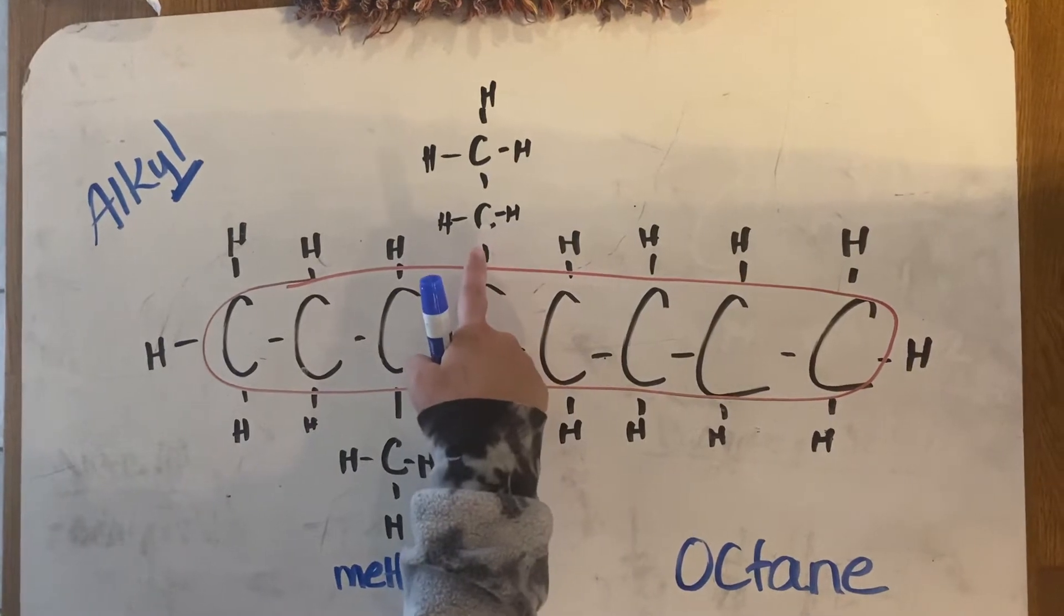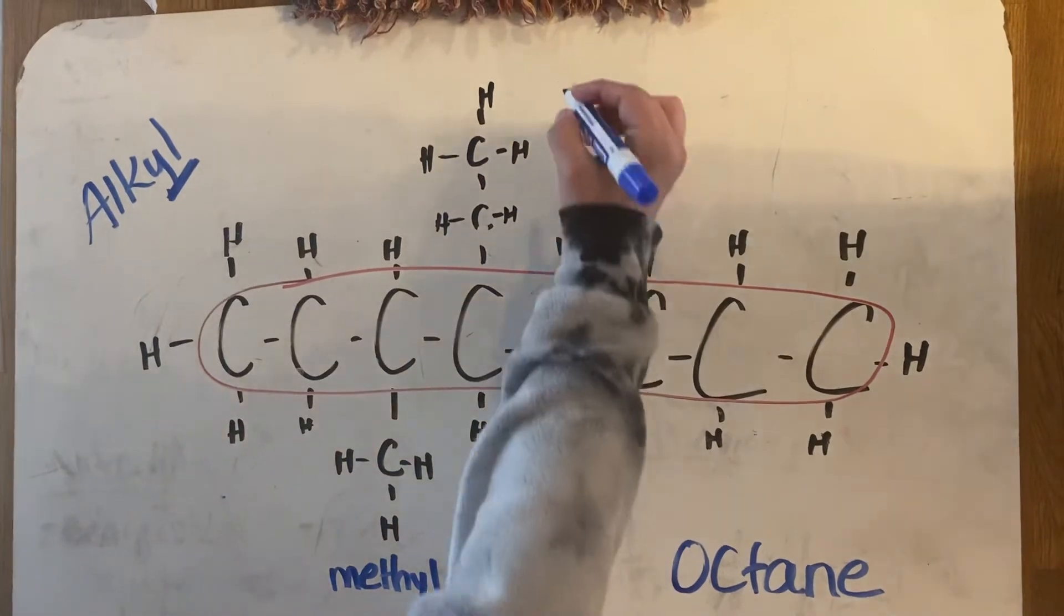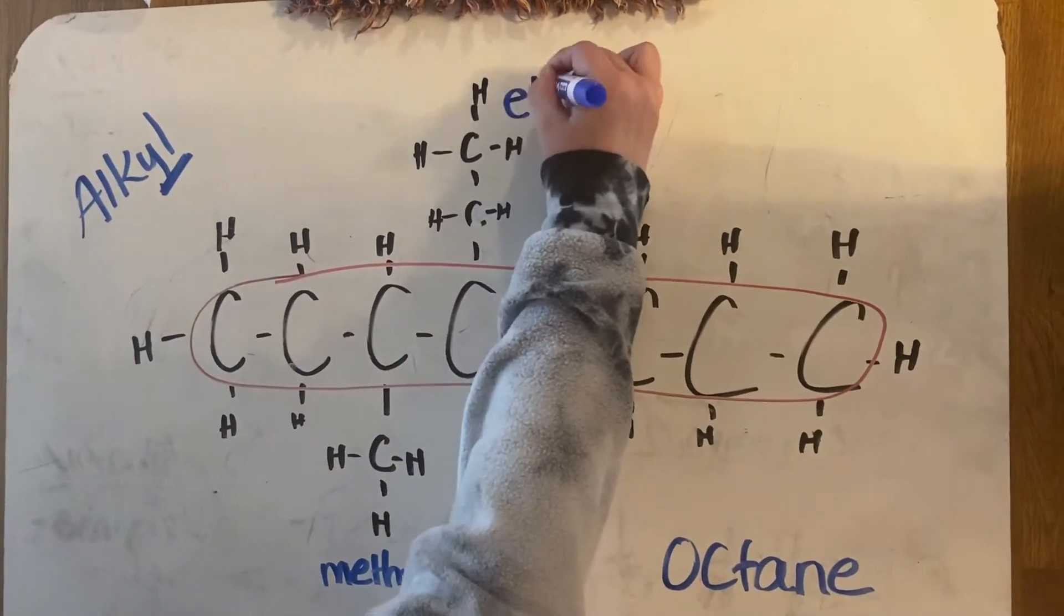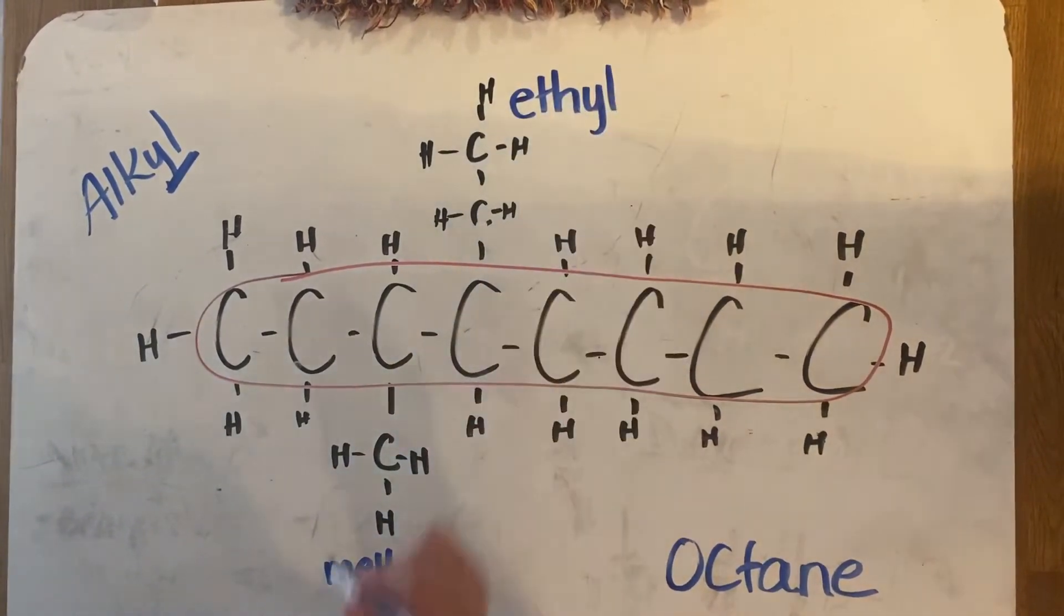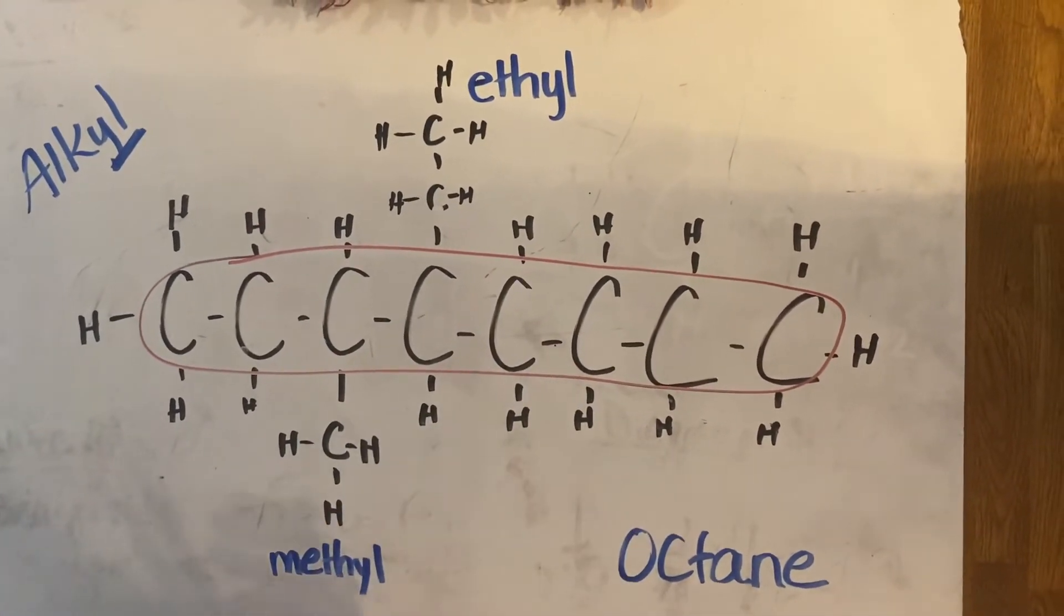Then I come to this one. That's not one carbon - that's two carbons connected. So again, go to Table P. Table P shows me that two carbons is called eth. End it with that YL again since it's an alkyl group. We have a methyl and an ethyl that come off our octane chain.